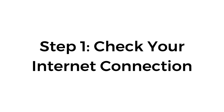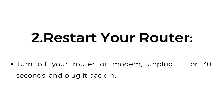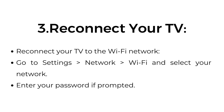Step 1: Check your internet connection. Verify internet access by going to Settings > Network > Network Status on your Devant TV to check if the TV is connected to Wi-Fi or Ethernet. Restart your router — turn it off, unplug it for 30 seconds, and plug it back in. Then reconnect your TV to the Wi-Fi network via Settings > Network > Wi-Fi, select your network, and enter your password if prompted.